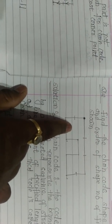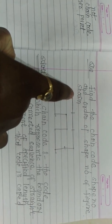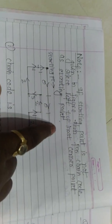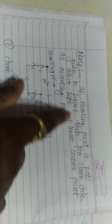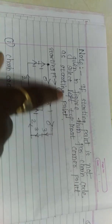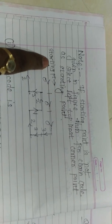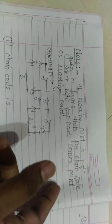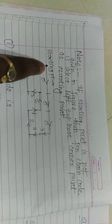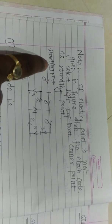Now let us see how the numerical is solved. In a numerical, the starting point is given by a dark point. If it is not given, then always remember: if the starting point is not given in the figure, select the left topmost corner point as the starting point. In this figure, the left topmost corner is selected as the starting point.